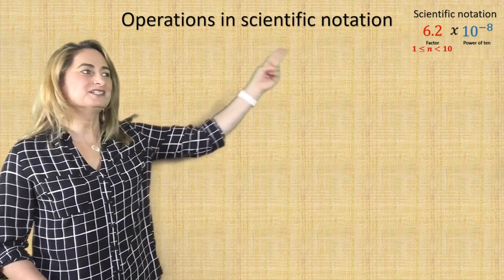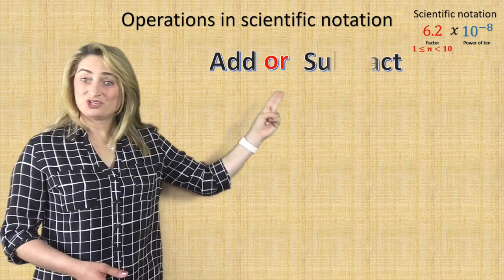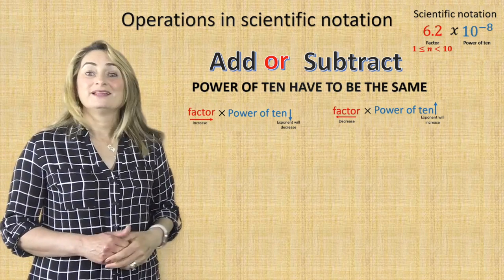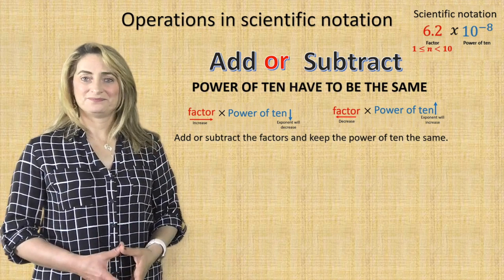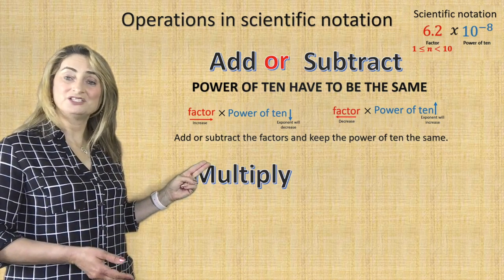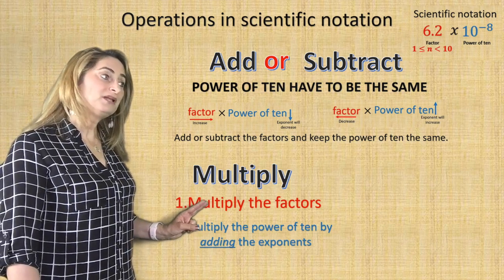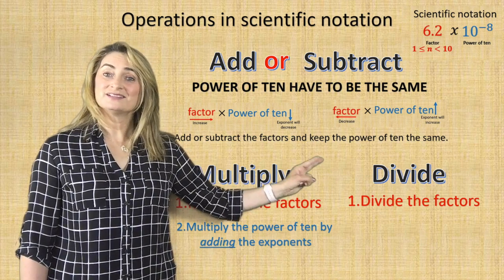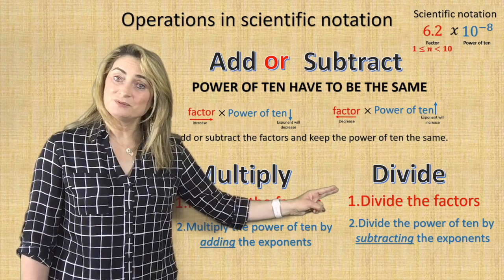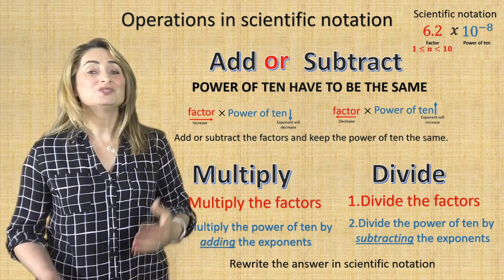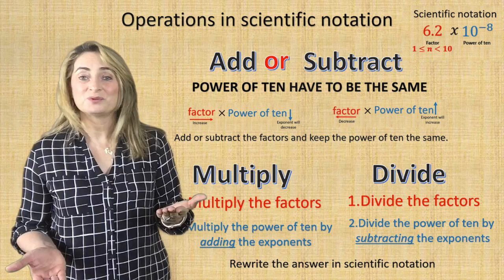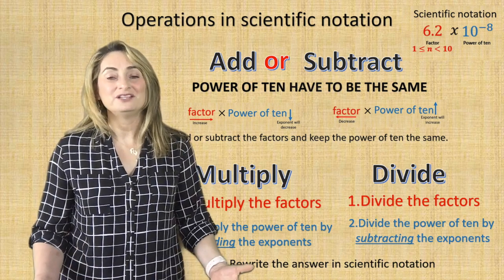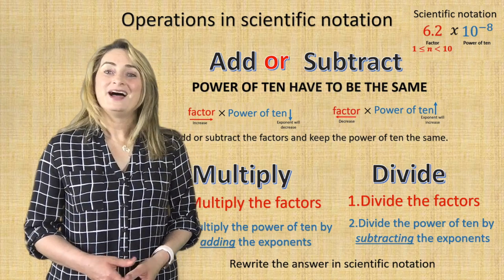In conclusion for today's lesson on operations in scientific notation: if you add or subtract, the power of 10 has to be the same, using the opposite relationship between the factor and the power of 10, then add or subtract the factors keeping the power of 10 the same. If you multiply, multiply the factors and add the exponents. If you divide, divide the factors and subtract the exponents. Always make sure the final answer is written in scientific notation. Thank you so much for watching, subscribing, and liking my videos. If you have any questions, please write in the comments below. Have a great day, see you next time.